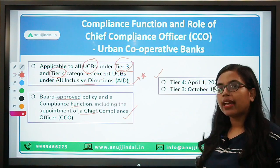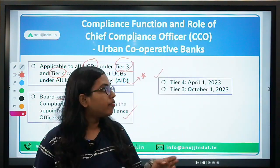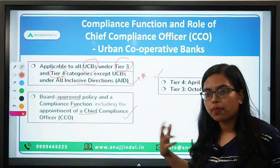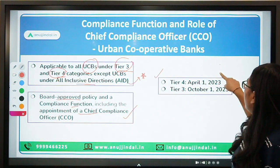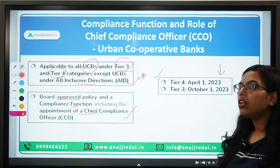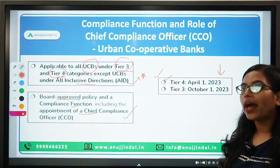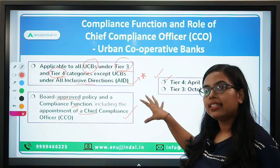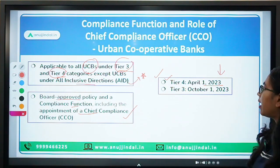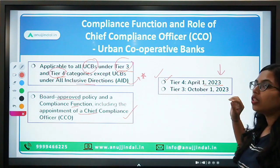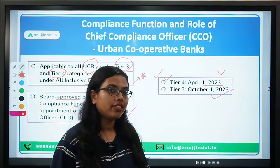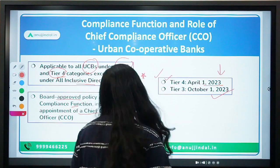Regarding timelines: in case of Tier 4 UCBs, they are required to follow the guidelines released by RBI by April 1, 2023. In case of Tier 3 UCBs, they need to comply with these guidelines by October 1, 2023. Tier 3 has been given a bit more leverage compared to Tier 4.